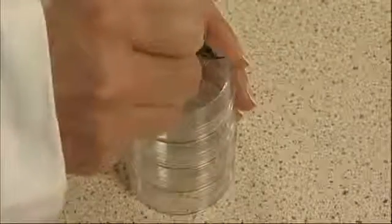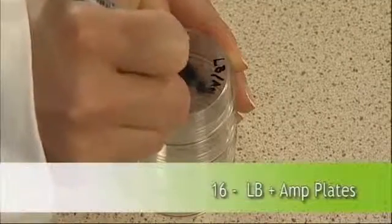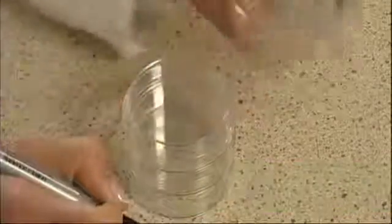Next we need to label 16 plates LB Amp. These plates contain LB agar and the antibiotic ampicillin, which is used to identify transformed bacteria.